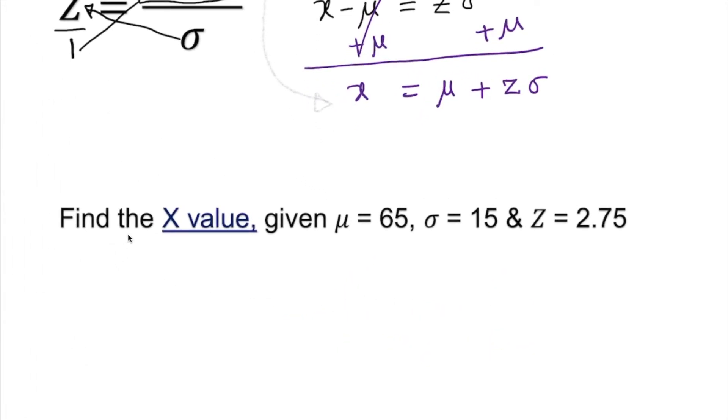Find the x value given mean equals 65, standard deviation is 15, and z-score is 2.75. We know that x equals population mean plus z times the standard deviation. All we do is just plug it in.